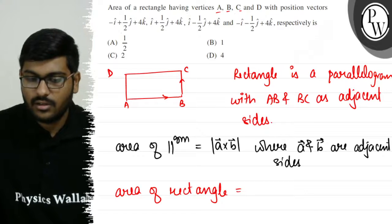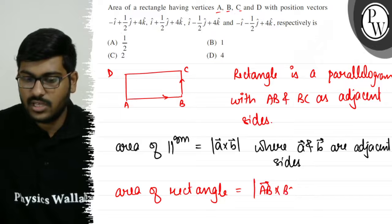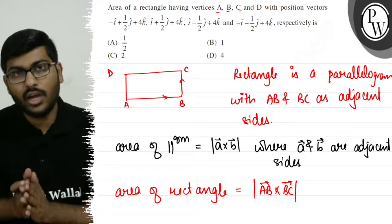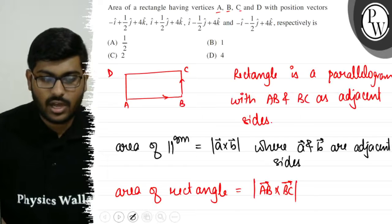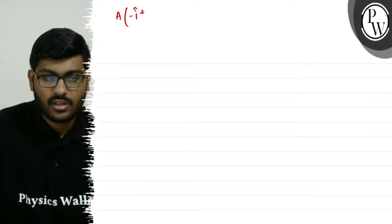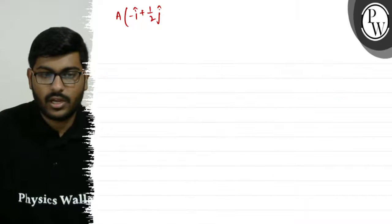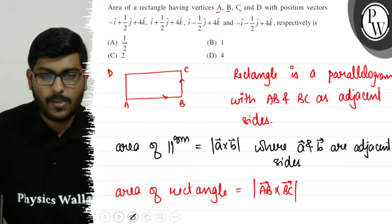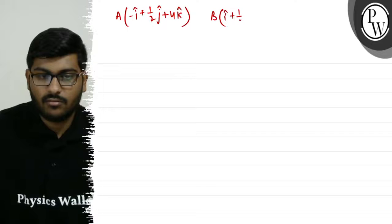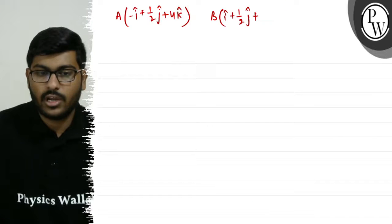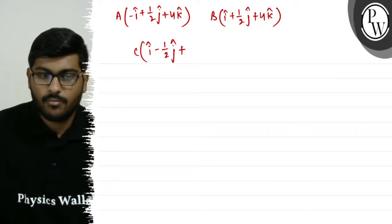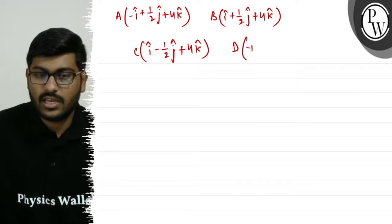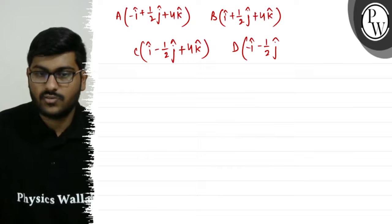We need the cross product of AB vector and BC vector. The position vectors are: A is minus i-cap plus 1/2 j-cap plus 4k-cap, B is i-cap plus 1/2 j-cap plus 4k-cap, C is i-cap minus 1/2 j-cap plus 4k-cap, and D is minus i-cap minus 1/2 j-cap plus 4k-cap.